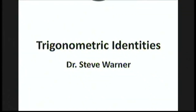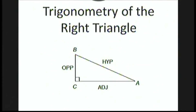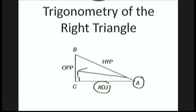Hello, I'm Dr. Steve Warner and today I'm going to talk about trigonometric identities. First, a quick review of the basic trigonometry of the right triangle. Let's fix an angle here, say A. The opposite side to A is BC, and the adjacent side to A — the one closest to A — is CA. We always pick the one that's not opposite the right angle, because the side opposite the right angle is called the hypotenuse. The adjacent and opposite sides are also called legs of the right triangle.